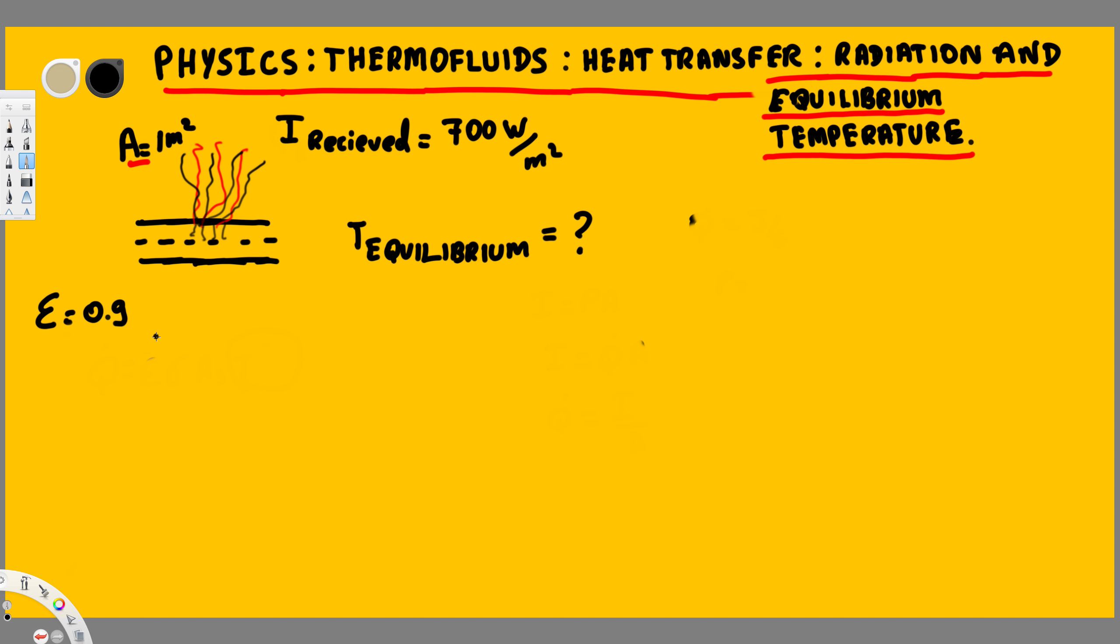Hey, what's going on guys, let's do this problem right here. Here we have a road and we are taking only one meter square of this. They have given the intensity received, which means every second there are 700 joules of energy received by this one meter square area. Now here they are asking for temperature.